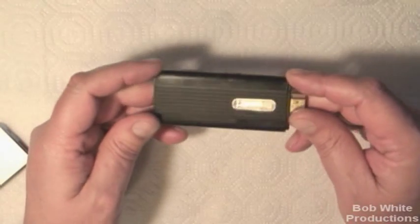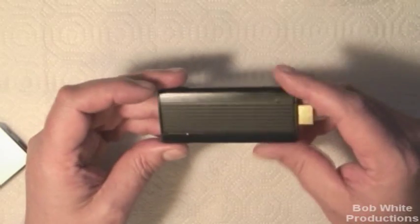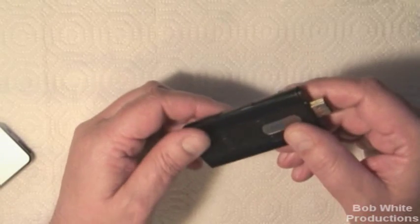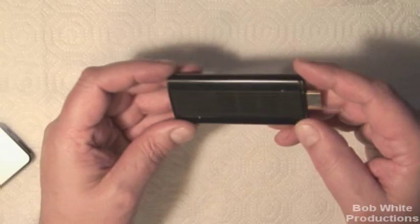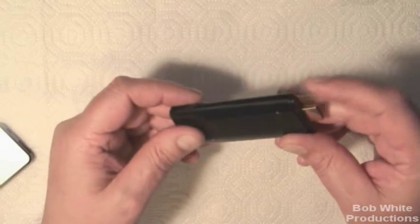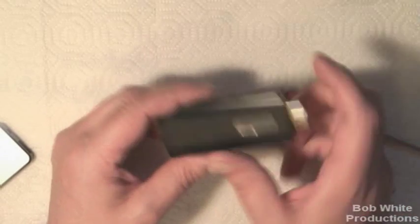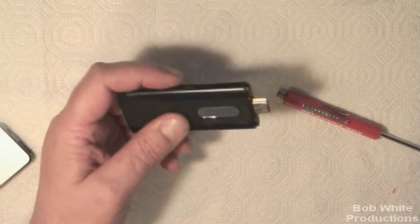I am not going to take apart the Tronsmart basically because it's all glued together. These metal sides are sticky taped on and you've got to do a lot of prying to get this apart. But based on pictures we've seen of the Tronsmart, it's got the little metal plate similar to the CX919.